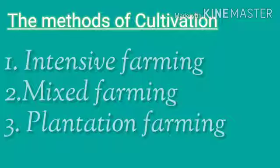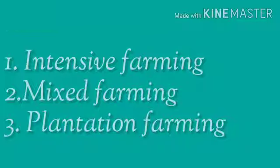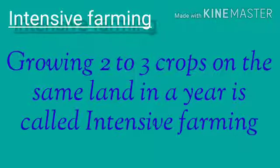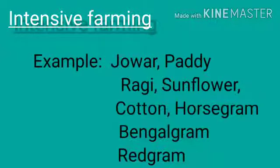First, intensive farming. Growing two to three crops on the same land in a year is called intensive farming. For example, jowar, paddy, ragi, sunflower, cotton, horse gram, bengal gram and red gram.